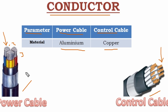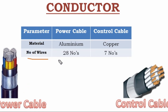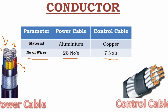Now we discuss the second parameter — the number of wires. In the power cable, the number of wires is 28 per core, and in the control cable it is 7 per core. The power cable has three cores, and each core has an aluminum conductor made up of 28 individual strands. The control cable consists of 16 cores, and each core consists of 7 strands of copper wire.